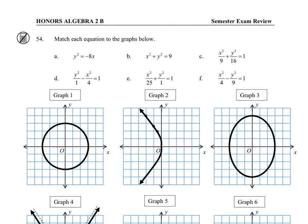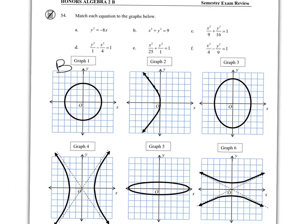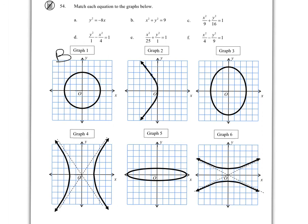For matching the graphs: we have one circle, so graph 1 matches equation B. We have two ellipses — graphs 3 and 5. The ellipse equations are E and C because they have addition between terms. The one with the bigger denominator under X matches graph 5, so that's E; graph 3 is C. That leaves two hyperbolas and one parabola. The parabola is graph A, the only parabola. For the two hyperbolas: D has Y as the positive variable, so that's graph 6, leaving graph 4 for F.